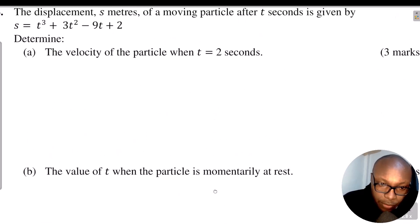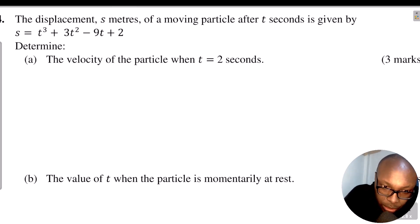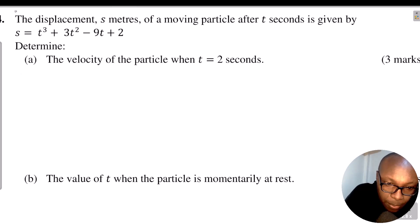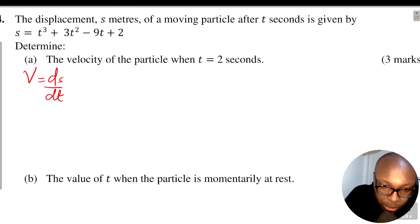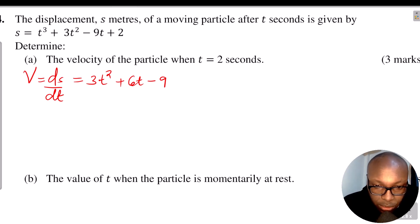For the first part, determine the velocity of the particle when t = 2 seconds. You're given displacement and required to get velocity. To get velocity, you differentiate displacement. So velocity v is given by differentiating displacement with respect to time t. When you differentiate t³ you get 3t², then differentiating 3t² you get 6t, differentiating -9t you get -9. So therefore velocity v = 3t² + 6t - 9.